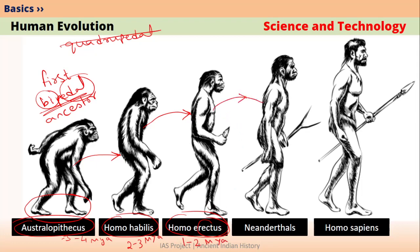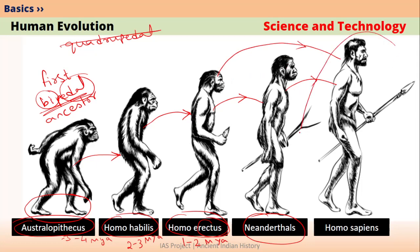Homo erectus then evolved into what is called Neanderthals. Then, Neanderthals evolved into true Homo sapiens. Homo erectus also evolved into Homo sapiens. This is basically the modern man we find today — the person you find in the streets is nothing but Homo sapiens sapiens.